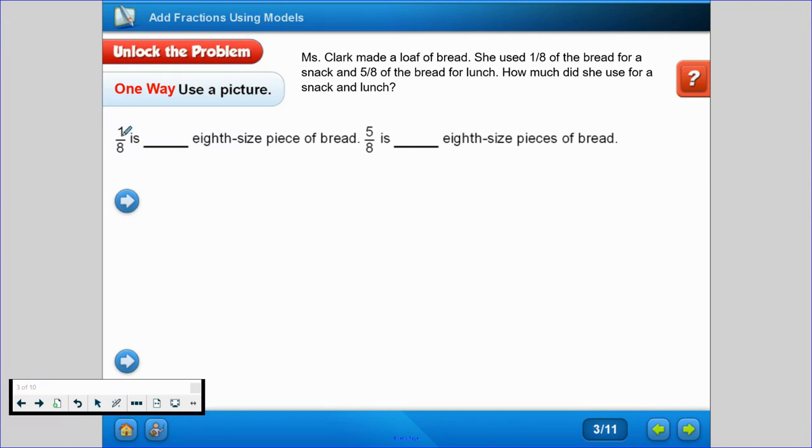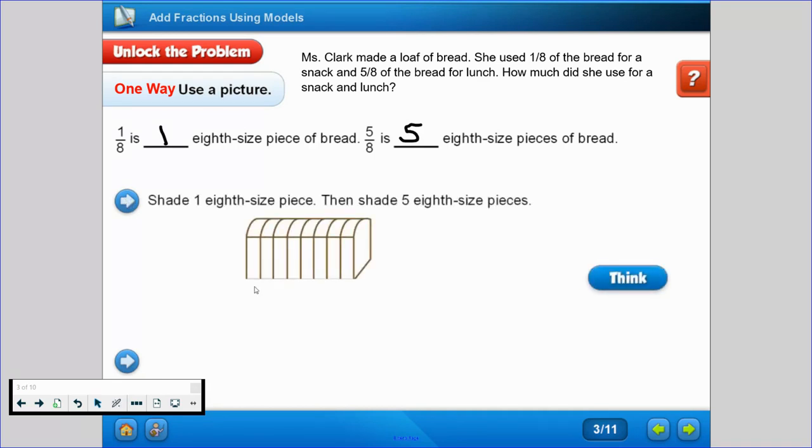We know that 1/8 is 1 eighth-size piece of bread, and 5/8 is 5 eighth-size pieces of bread. So if we're going to draw a picture, here's our loaf of bread. We're going to shade 1/8 size piece of bread, and then shade 5/8 size pieces of bread: 1, 2, 3, 4, 5.